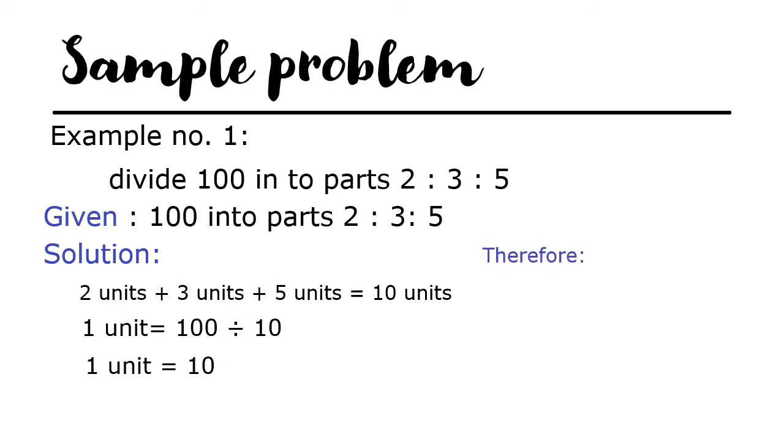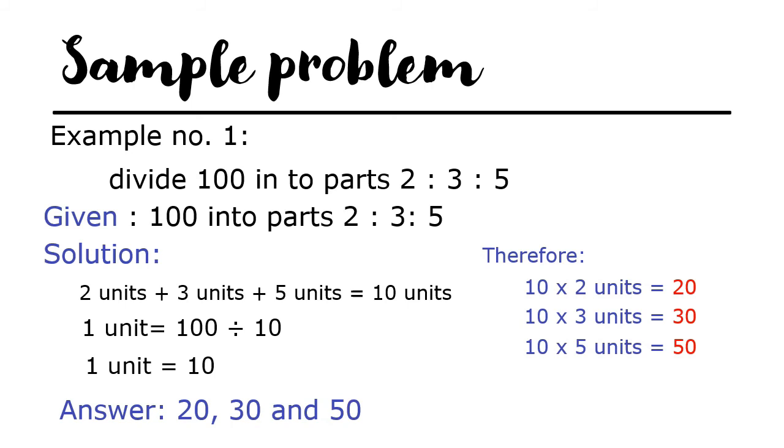1 unit is equal to 10. Therefore, 10 times 2 units is equal to 20, 10 times 3 units is equal to 30, and 10 times 5 units is equal to 50. The answer is 20, 30, and 50.